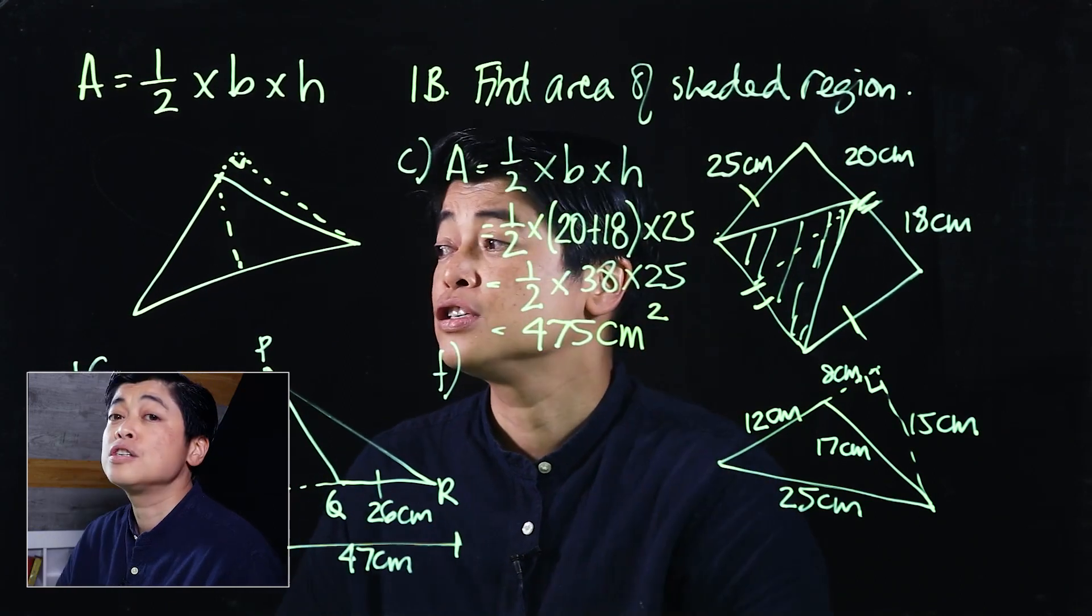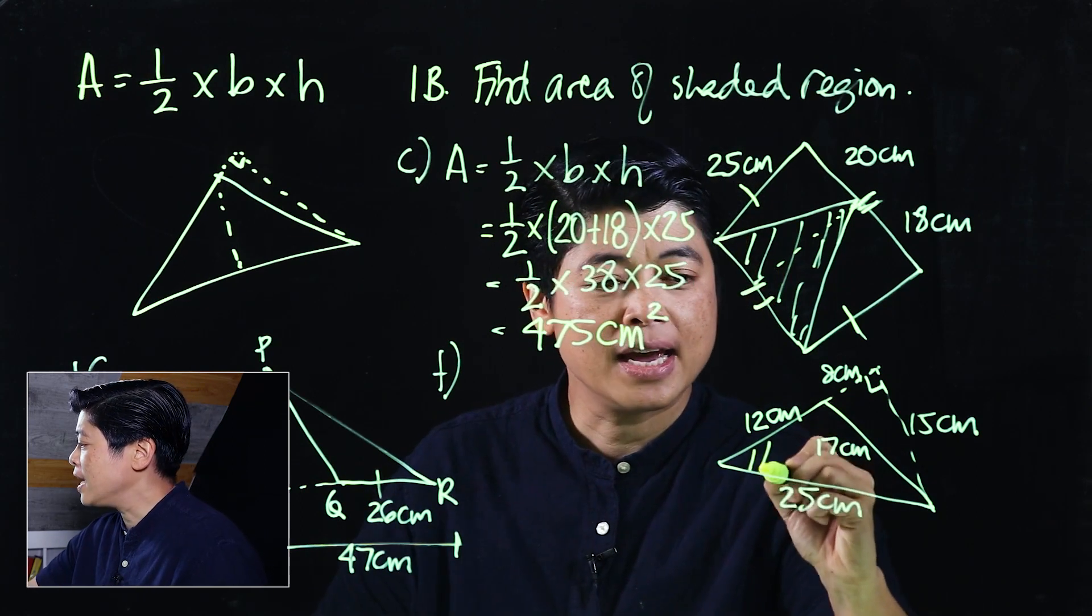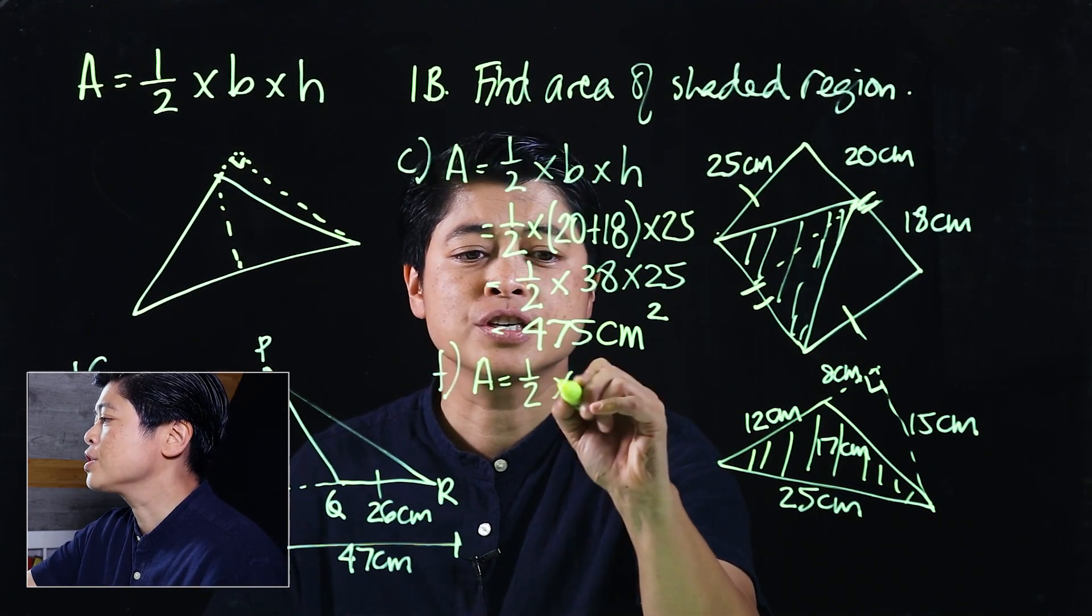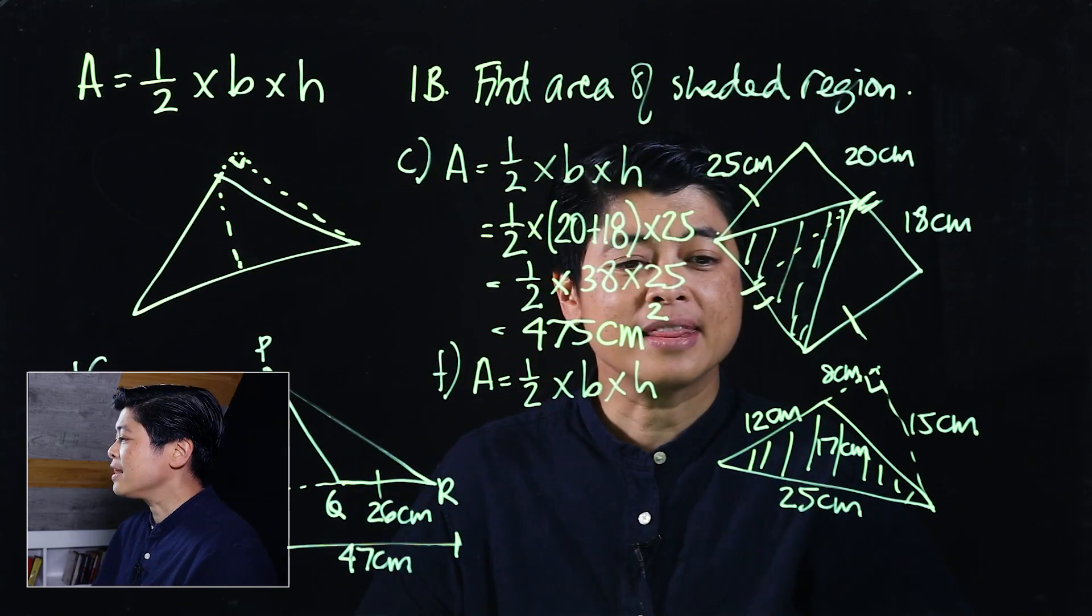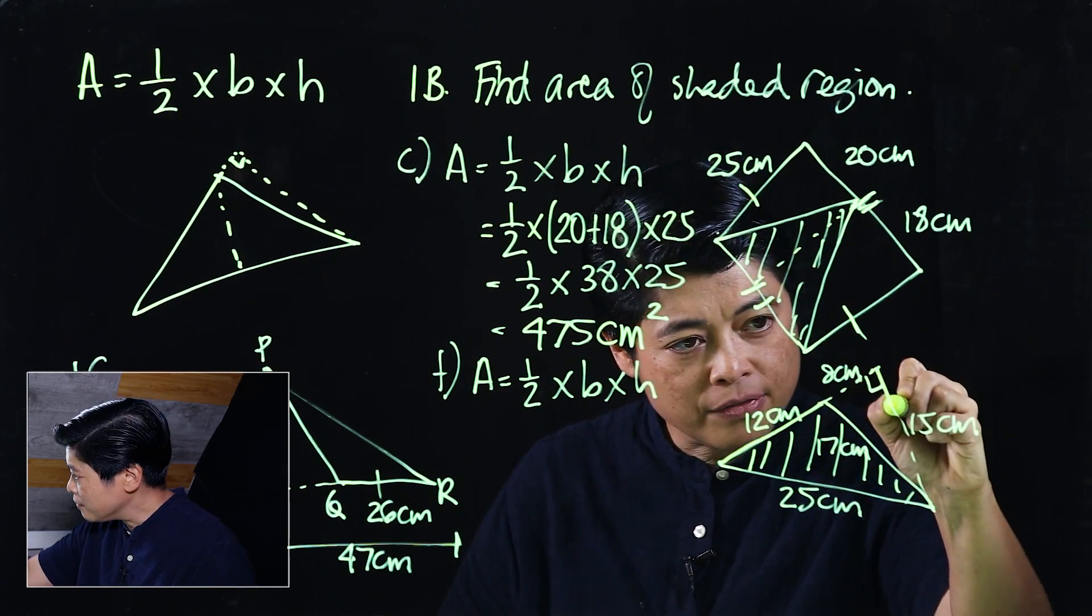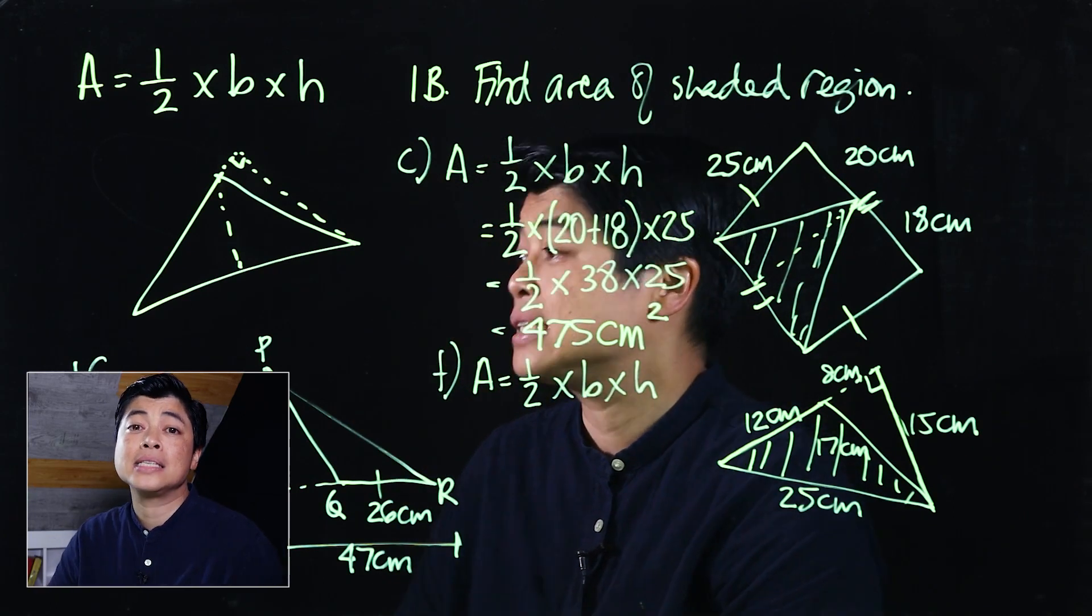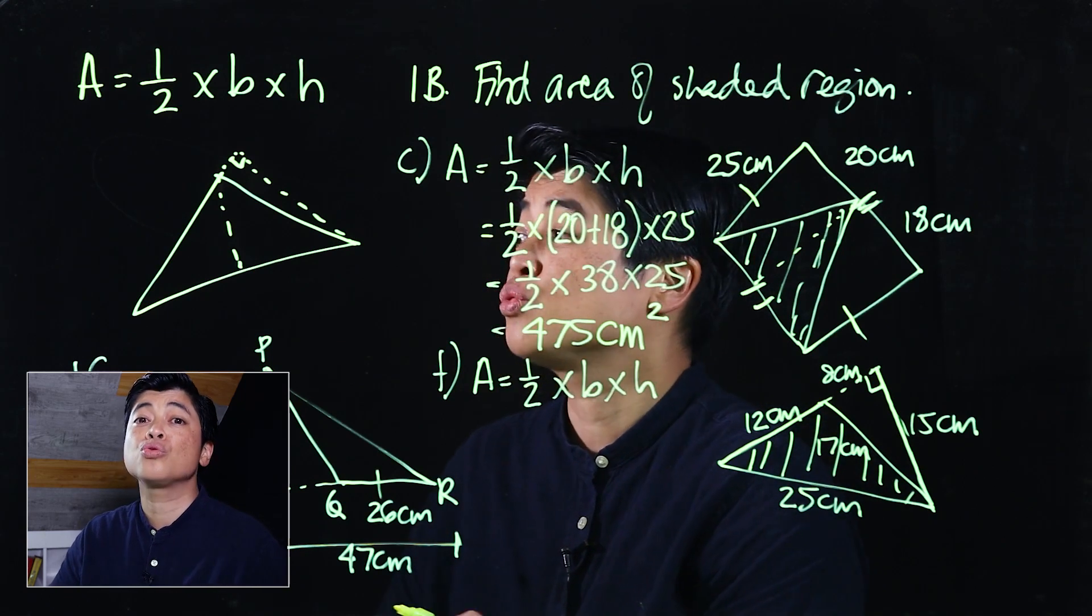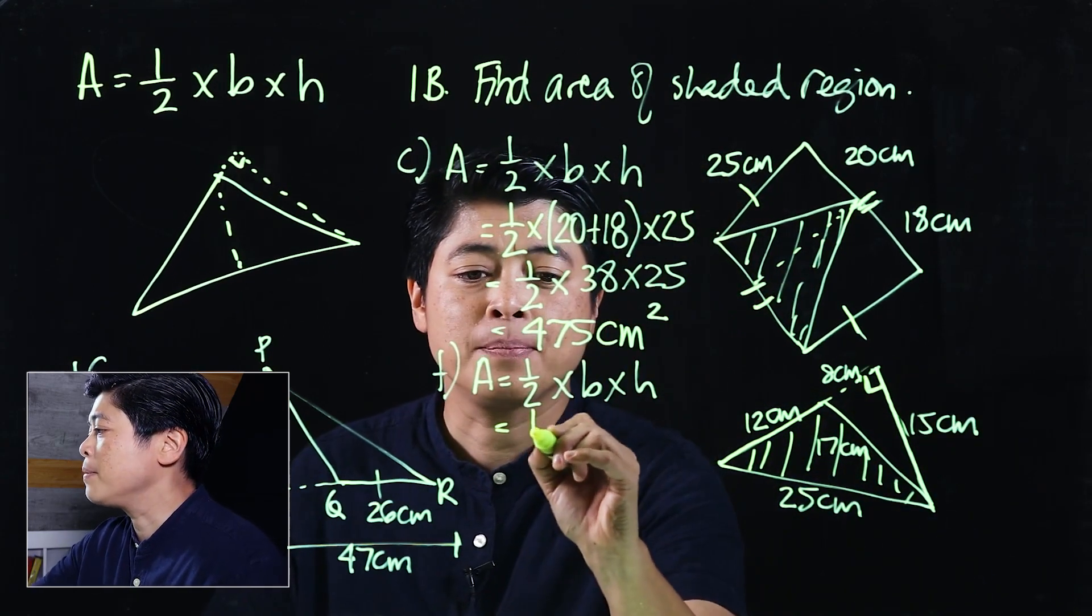Since the unit of measurement is in centimeters and this is an area, then that means that will be centimeters squared. Now looking at letter f, the shaded portion is this. We need to again distinguish which one would be the base and which one will be the height. So if we look at this, this will be the base, the 12, and this will be the height. The height does not have to be inside the triangle, but it has to be perpendicular to the base.